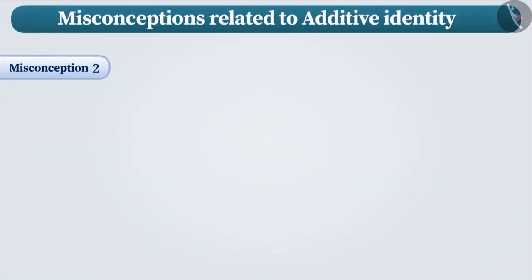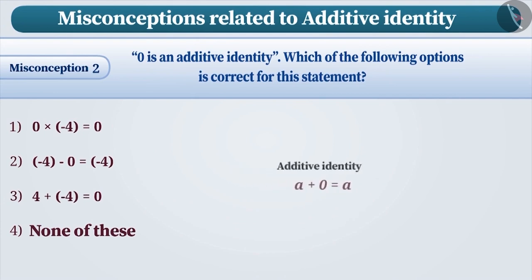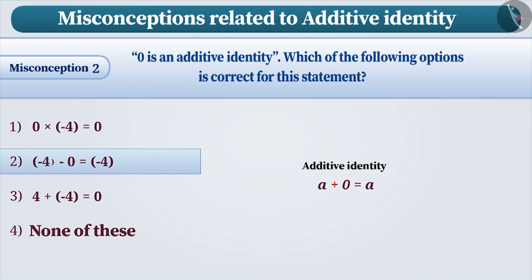Misconception 2: 0 is an additive identity. Which of the following options is correct for this statement? Some children ignore the fact that additive identity is the property of addition. In option 2, 0 is subtracted from minus 4 and the result obtained is also minus 4. Here, subtraction is carried out and not addition. Therefore, this example is not suitable for the statement '0 is an additive identity.' Thus, option 2 is an incorrect answer.